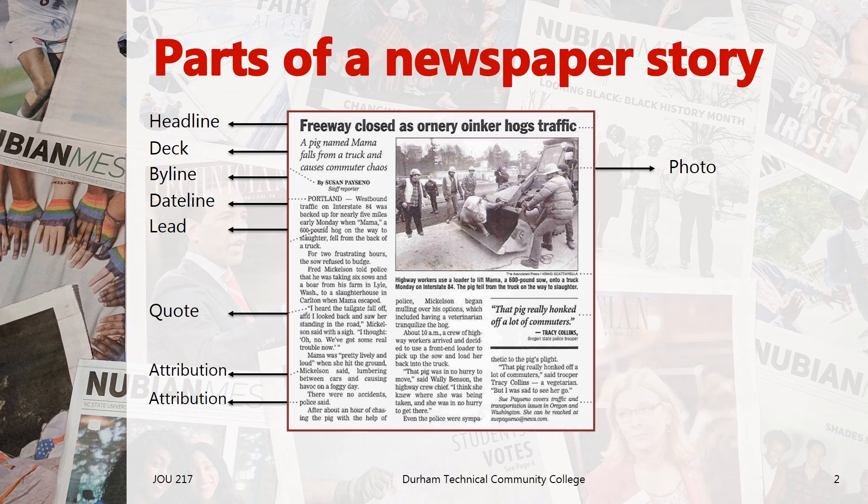Moving on to the other side of the story, you'll see a photo — a picture that can run in either color or black and white to help illustrate the story. Here, highway workers use a loader to help get Mama back on the truck. Underneath the photo is the caption: words identifying people in the photo, if possible by their names, and relating it to the accompanying story. Ideally, the photographer would be able to identify those highway workers by name, but the job title does work too.